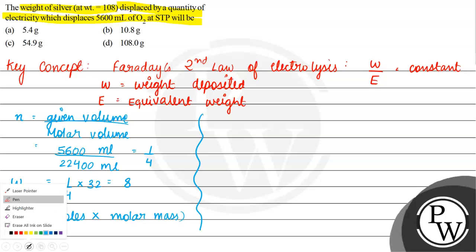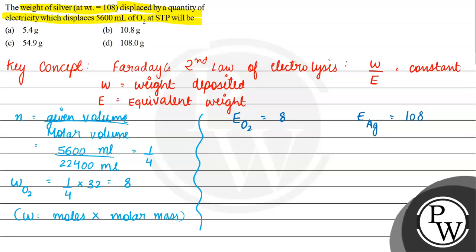So now let's see the equivalent weight of both. So equivalent weight of O2 is equal to 8 and equivalent weight of silver, that is Ag, is equal to 108. So this formula, that is W upon E is constant, so W1 upon E1 is equal to W2 upon E2.